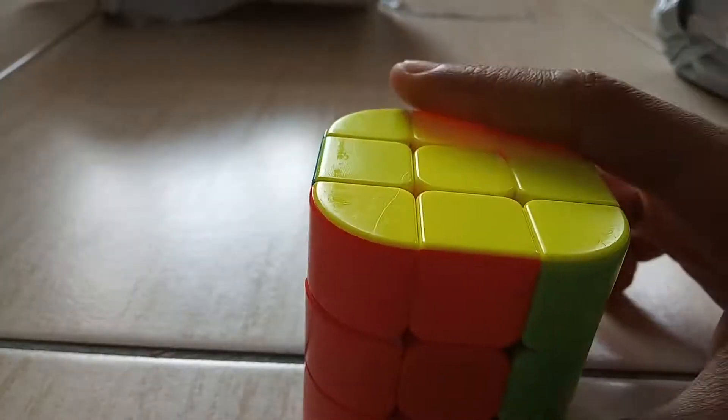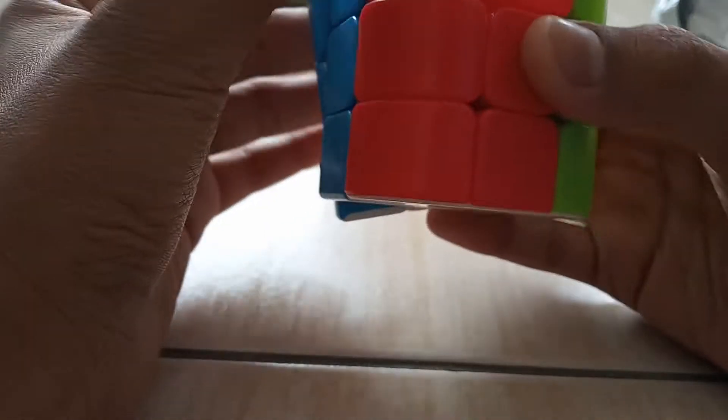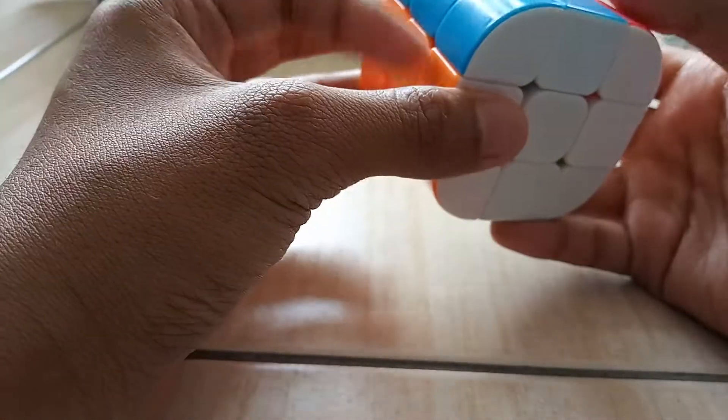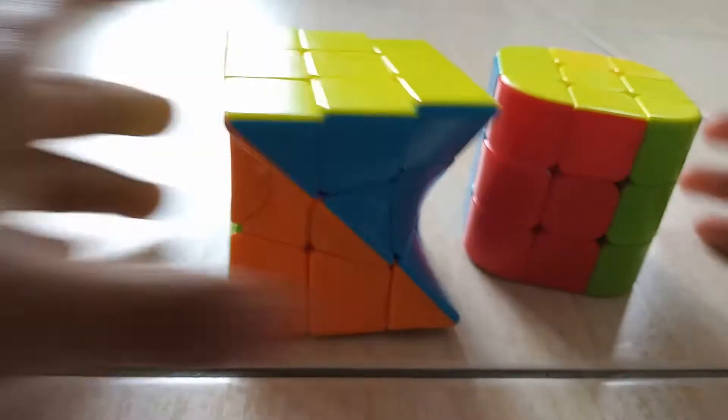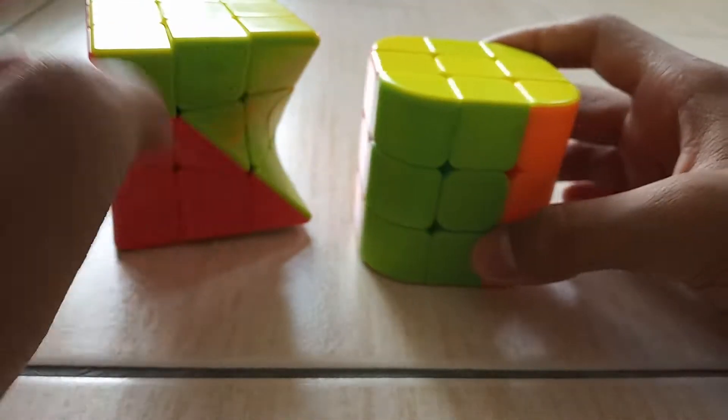So here's the cube. First thing first, the cube has very good colors man, very bright and fluorescent colors. But this cube, the color scheme is like the same as our Qiyi Young cube. Okay, so if we see side by side, actually the color shade looks kind of the same.